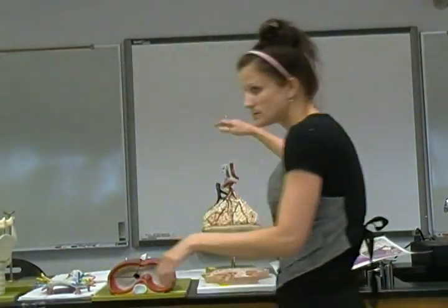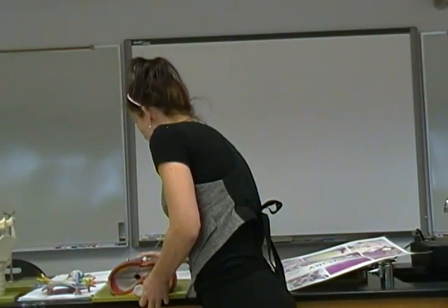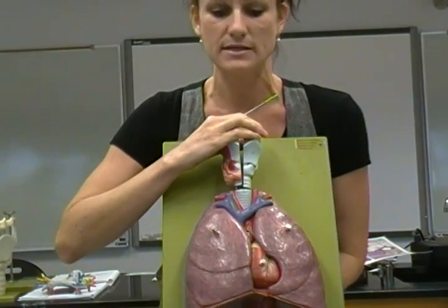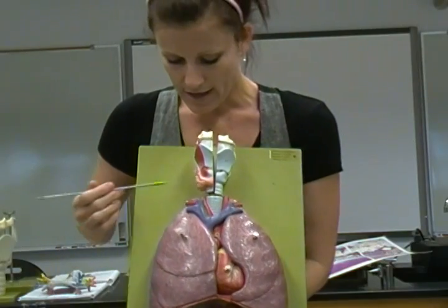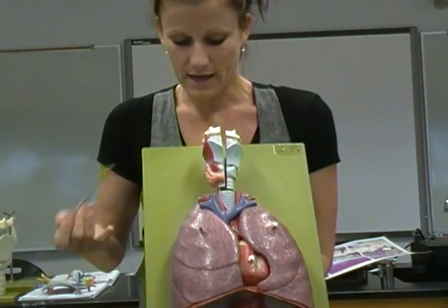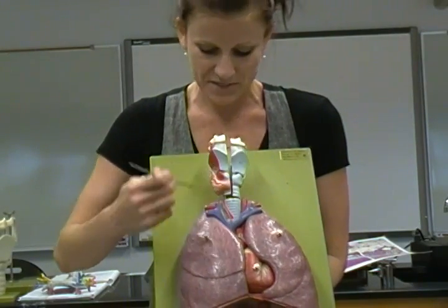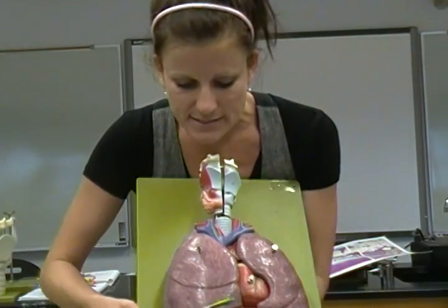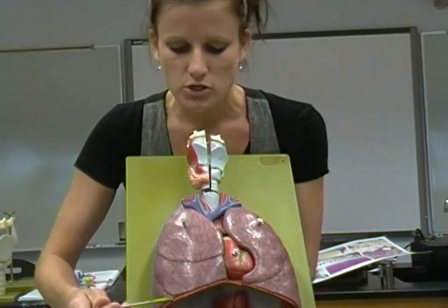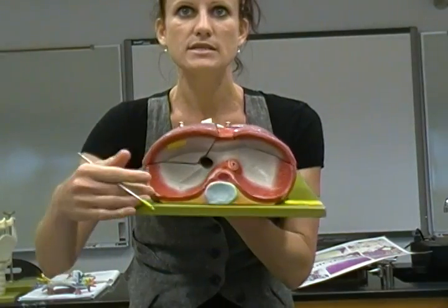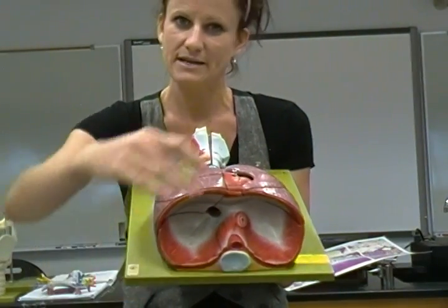After that we go to the bronchioles, which you can't see on this model. I'll show those when we get to the model of an individual lobe. The lungs are divided into sections called lobes, visible on this model showing the right and left lung. Each lung has an apex — the tip pointing up — and a base at the bottom, which connects to the diaphragm, shown as this red line here.